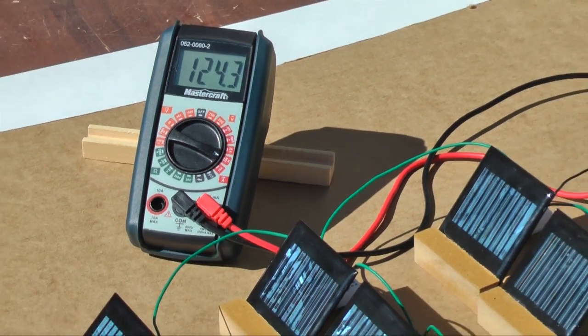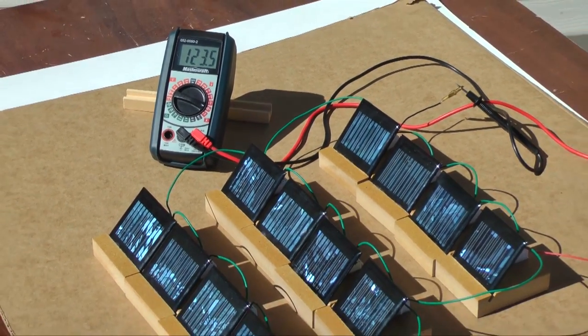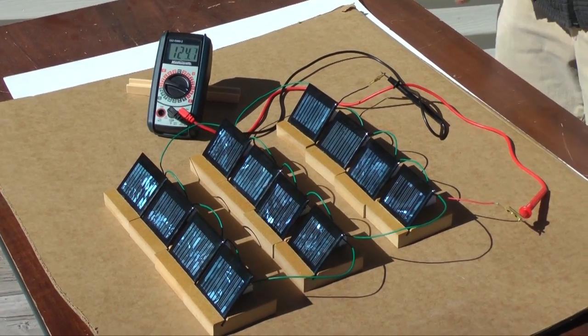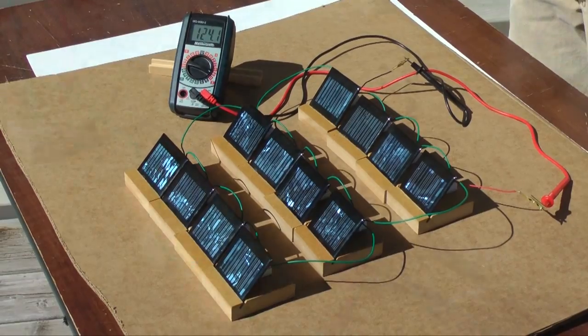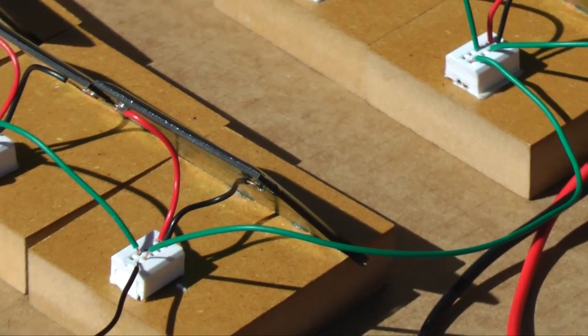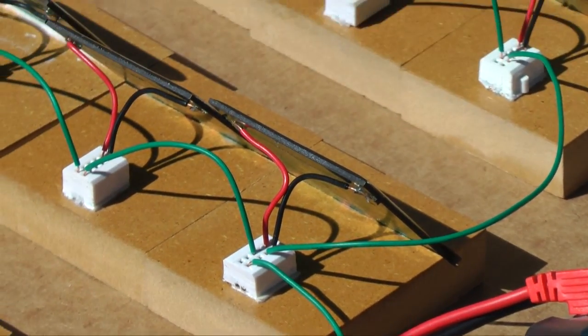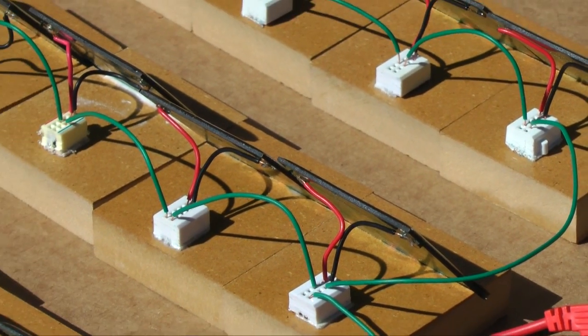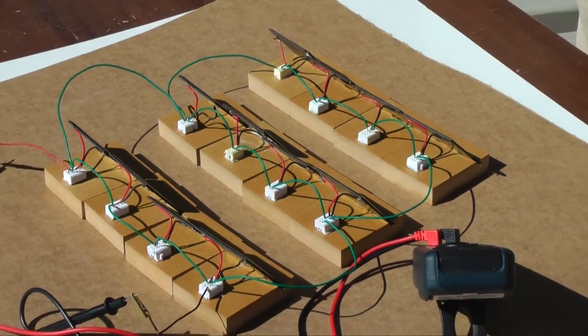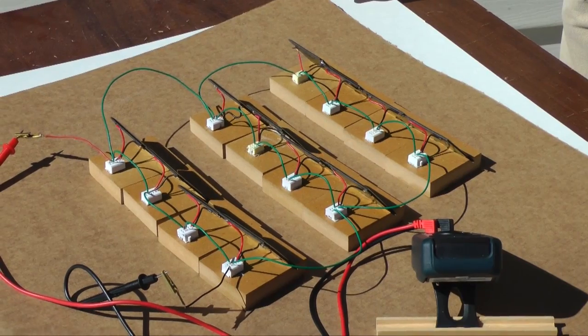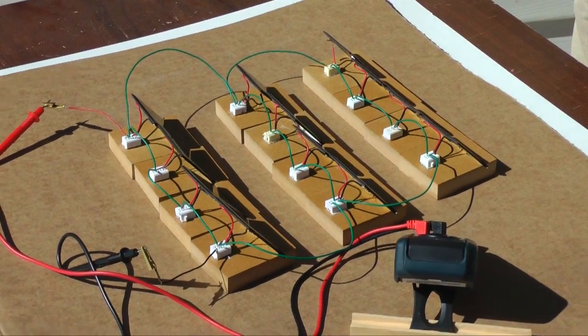Again, this array combines series and parallel circuit components to increase voltage and current. In this basic demonstration of a solar array, we didn't discuss a number of issues that array designers have to consider. Issues like panel alignment, use of diodes to block reverse flow, and load balancing.